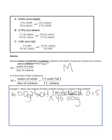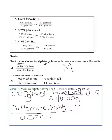Now we want moles per liter: 0.15 moles of NaOH divided by 0.500 liters gives us a molarity of 0.300 M NaOH. So our concentration of sodium hydroxide is 0.300 molar.